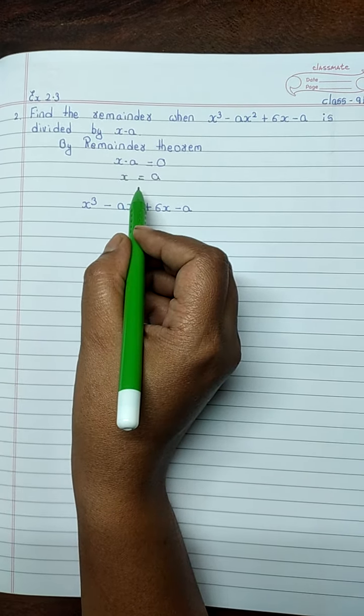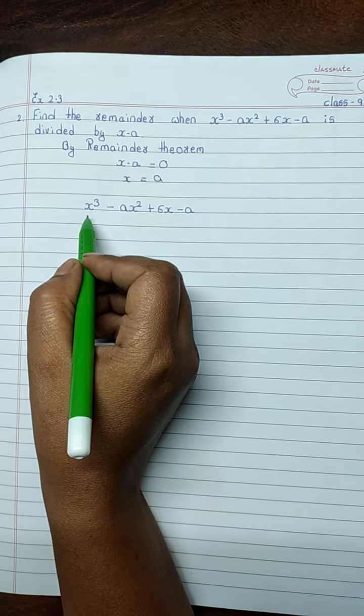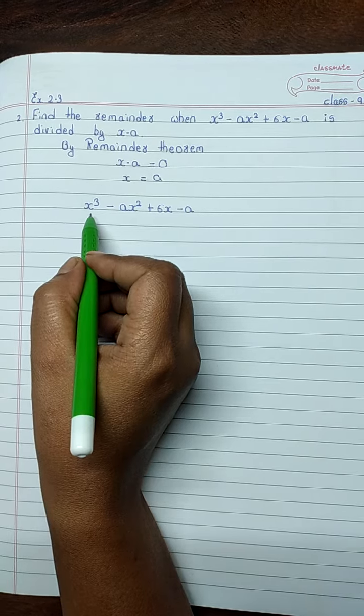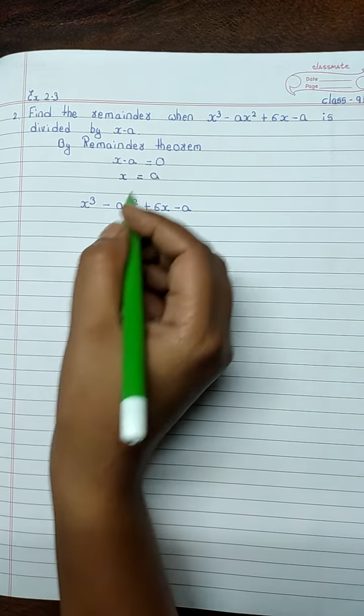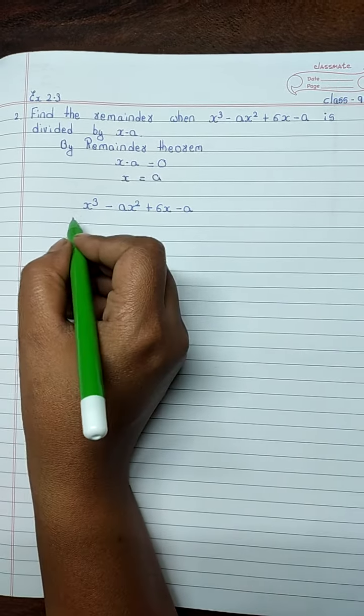Now, we put the value of x equal to a in the below polynomial, i.e., x cube minus ax square plus 6x minus a. x equals a. Therefore,